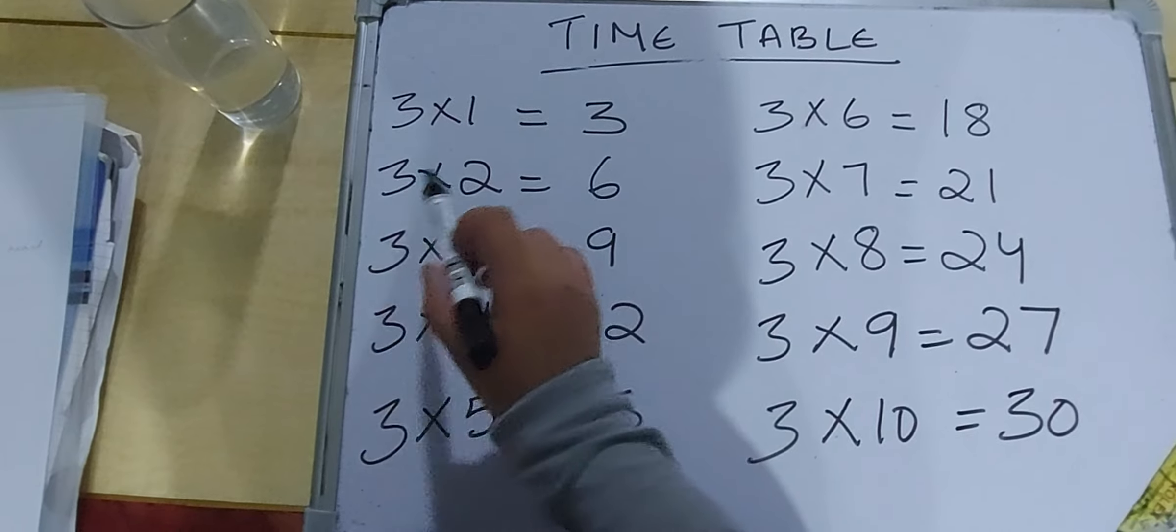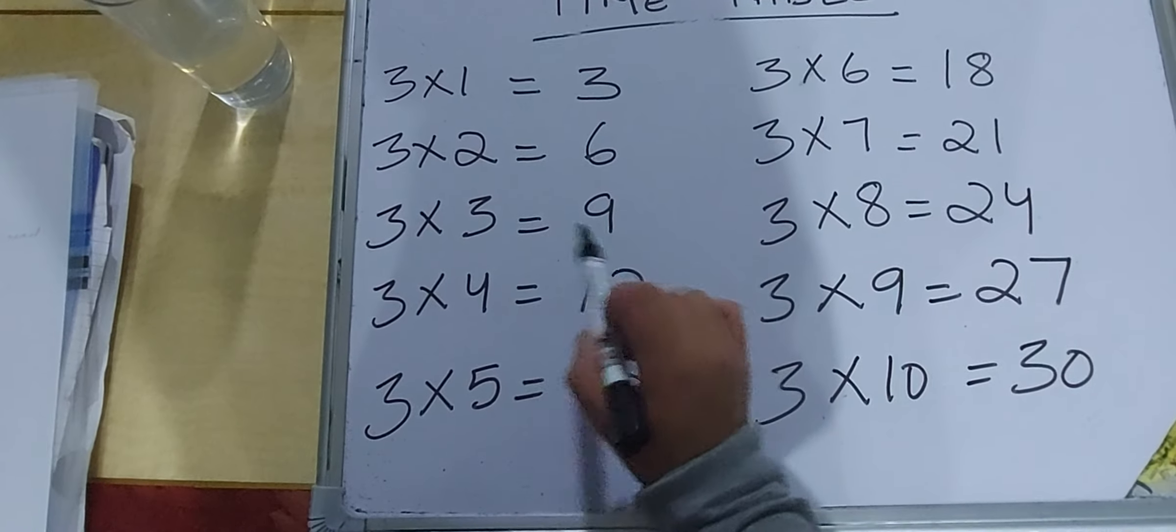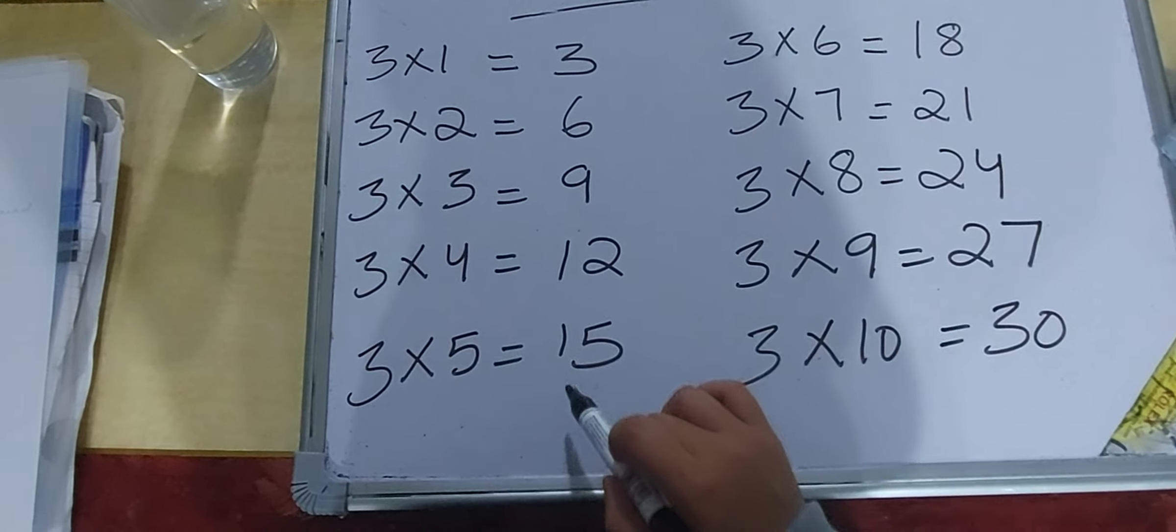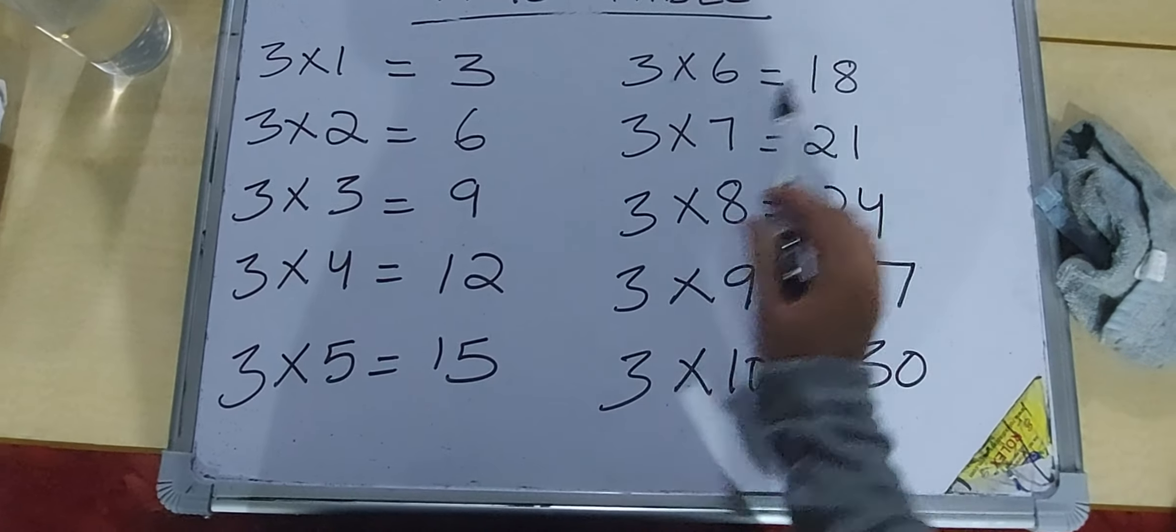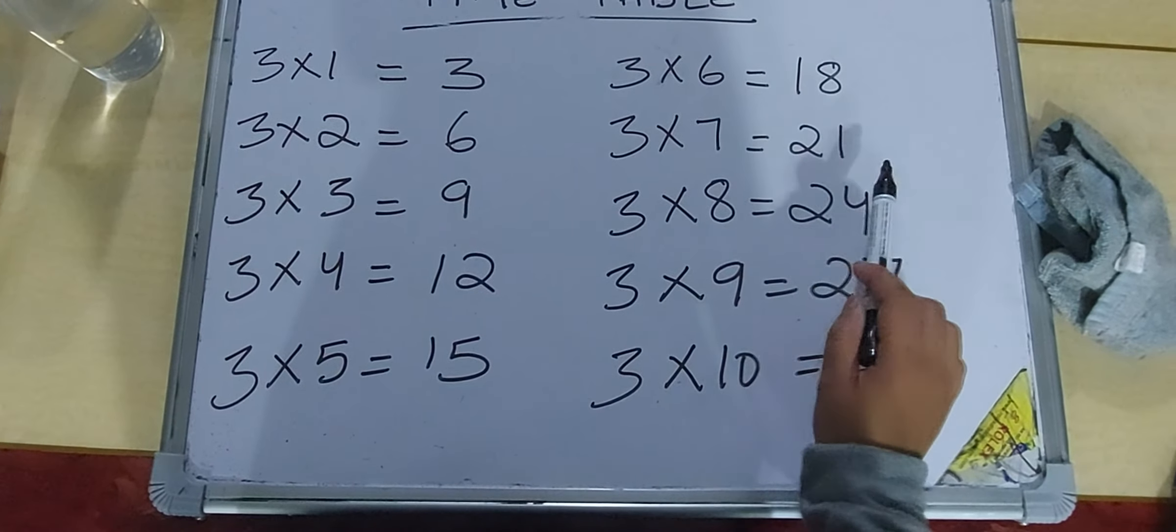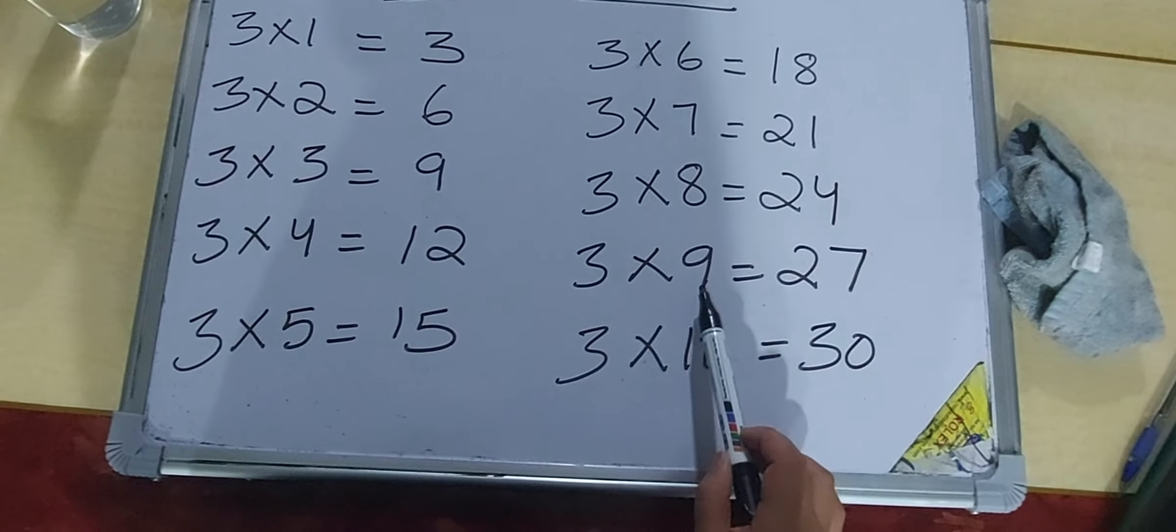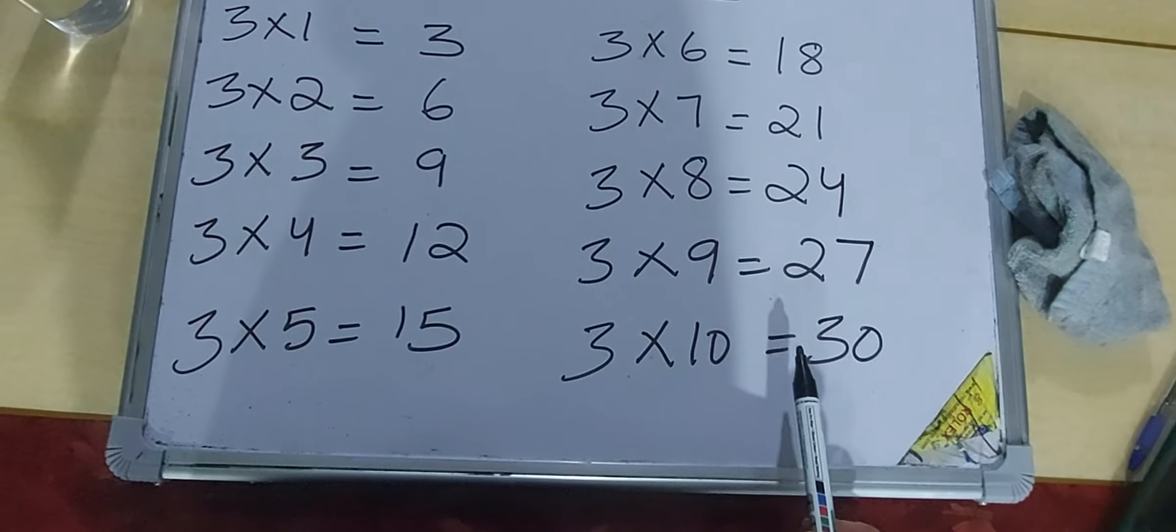Three one is three. Three twos are six. Three threes are nine. Three fours are twelve. Three fives are fifteen. Three sixes are eighteen. Three sevens are twenty-one. Three eights are twenty-four. Three nines are twenty-seven. Three tens are thirty.